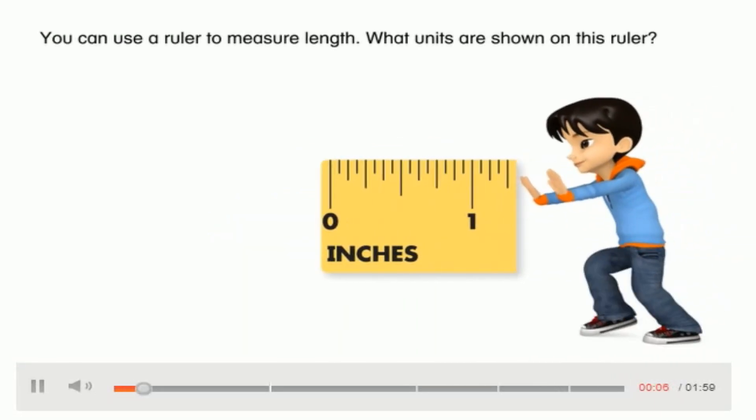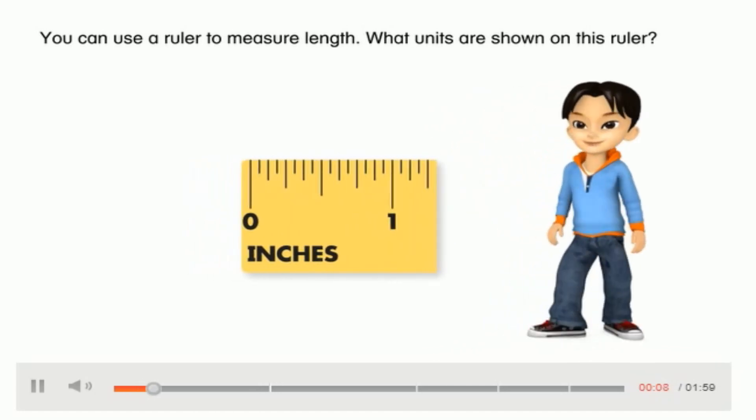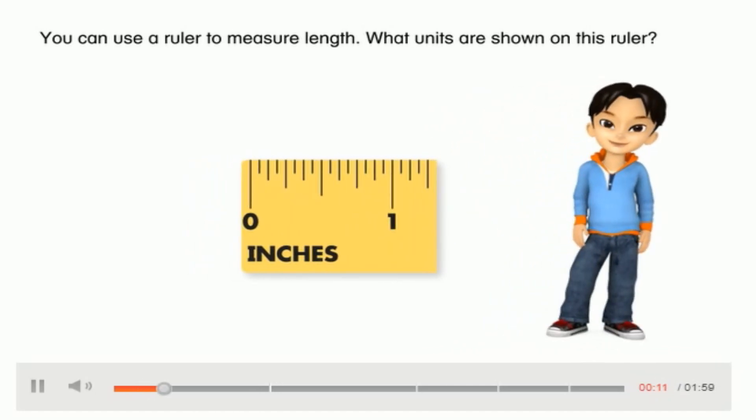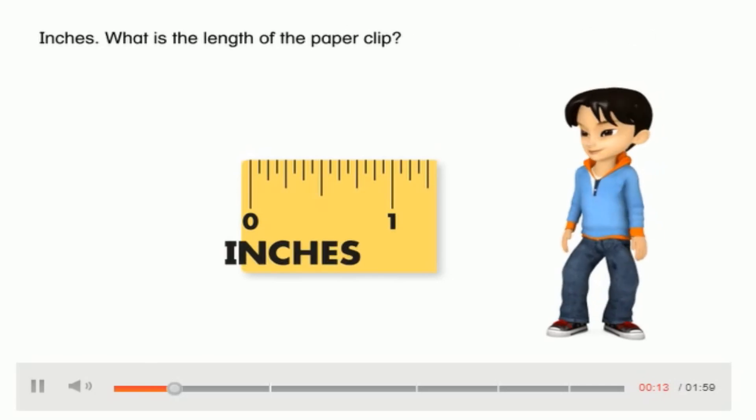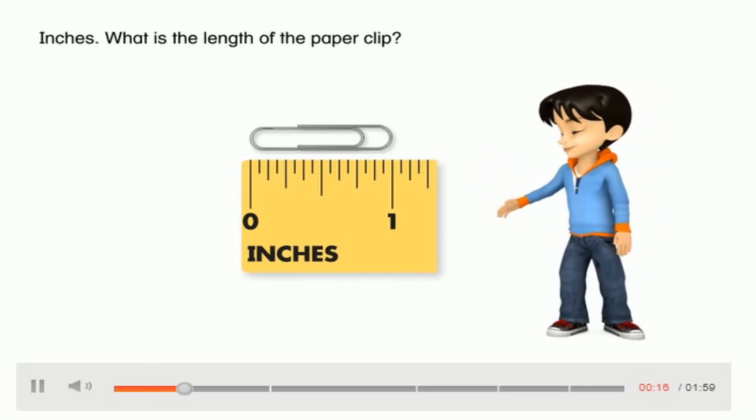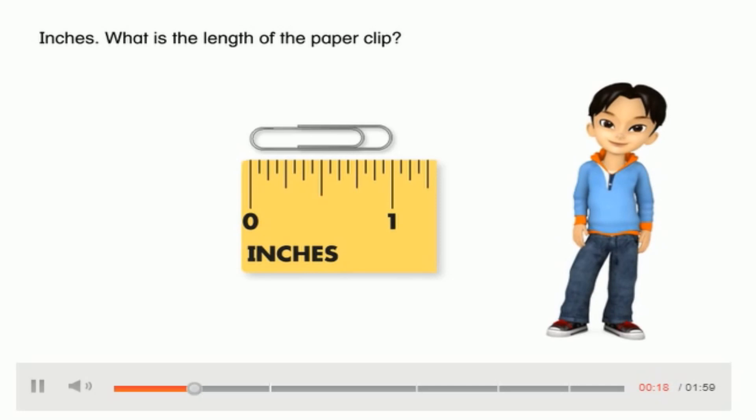So let's watch a video related to lesson. You can use a ruler to measure length. What units are shown on this ruler? Inches. What is the length of the paper clip? So what was the length for paper clip? We discussed the length of this paper clip in two previous lessons. So it's starting from zero and it is finishing on one. So the length of this paper clip is about one inch. Very good.